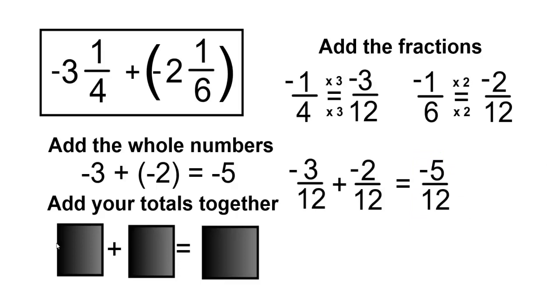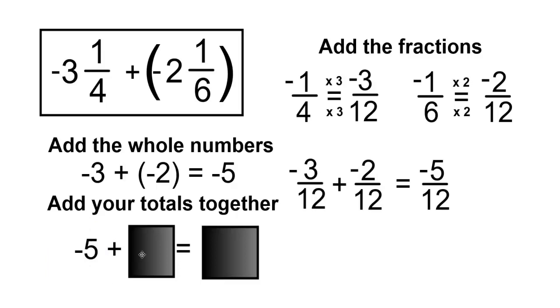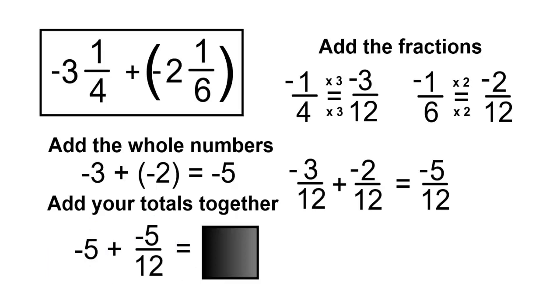Now we add our totals together. So we have negative 5 plus negative 5 over 12, and that's going to equal negative 5 and 5 over 12.